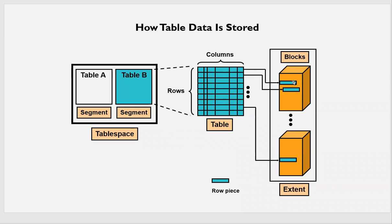If a row is too big, it cannot fit in one block, and that row can spread across another block. For example, assuming row two is very big and the entire row cannot be written into one block, half of the row will go to one block and the other half will go to another block.